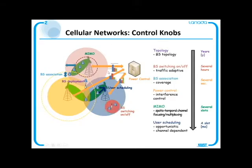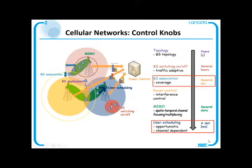As shown in this figure, we consider that all frequency resource management schemes are separated into six categories by operational time scale in cellular networks. In this paper, we mainly talk about user scheduling, which selects a user at a base station, and base station association, which determines the coverage of a base station.